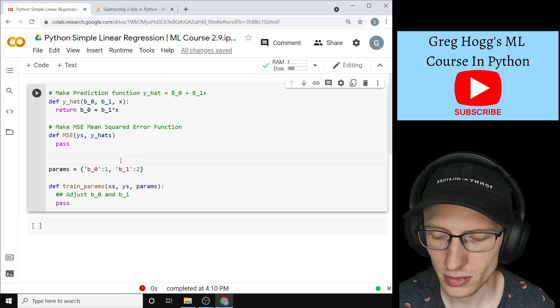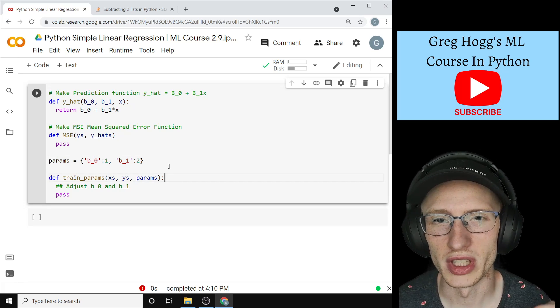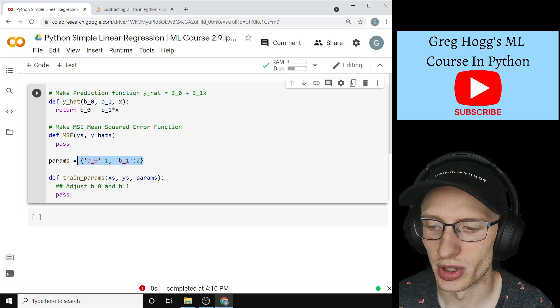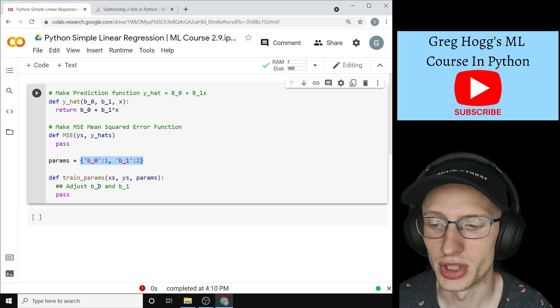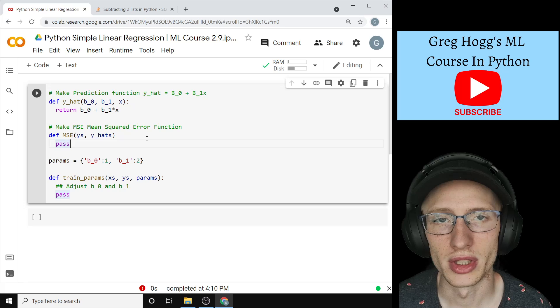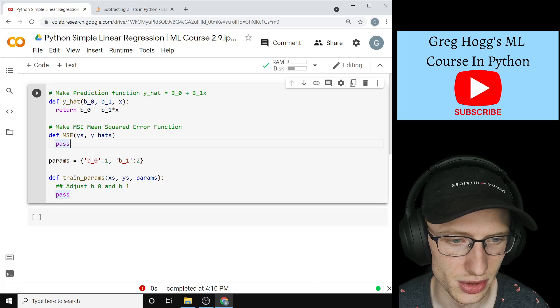We also have train params, whose job is to really get the right beta naught and beta 1. We set it up as a dictionary, so we're going to pass it this thing, and it's going to adjust beta naught and beta 1 accordingly. Okay, so the MSE, we can do that right away, and I'll switch over to my iPad here so you can see that.